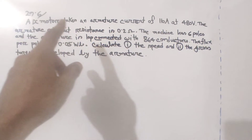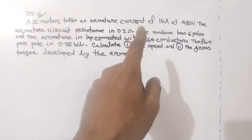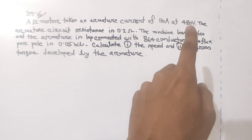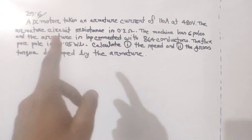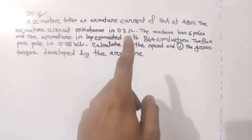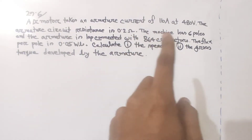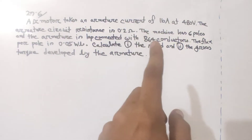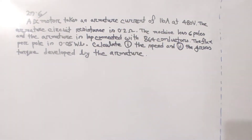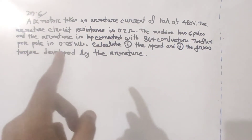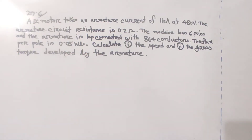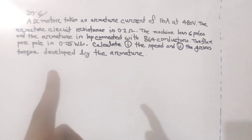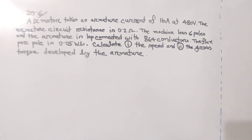The question is: a DC motor takes an armature current of 110A at 480V. The armature circuit resistance is 0.2 ohm. The machine has 6 poles and the armature is lap connected with 864 conductors. The flux per pole is 0.05. Calculate the speed and the gross torque developed by the armature.